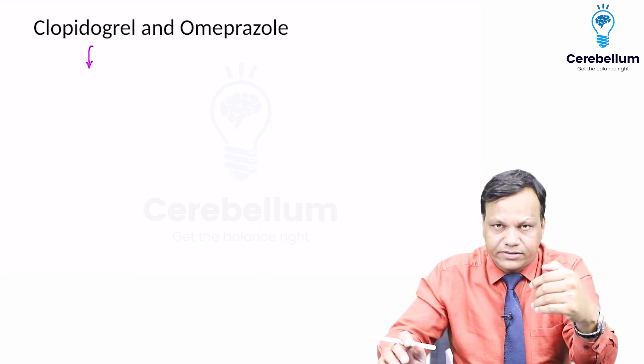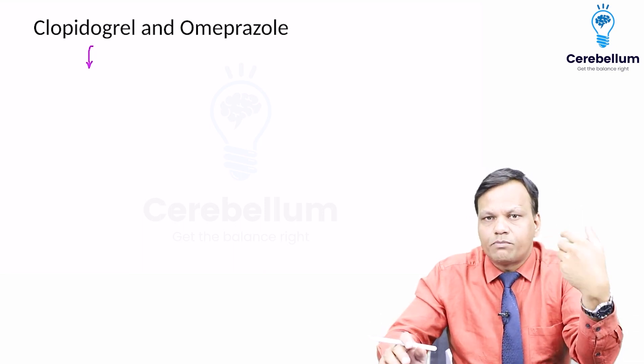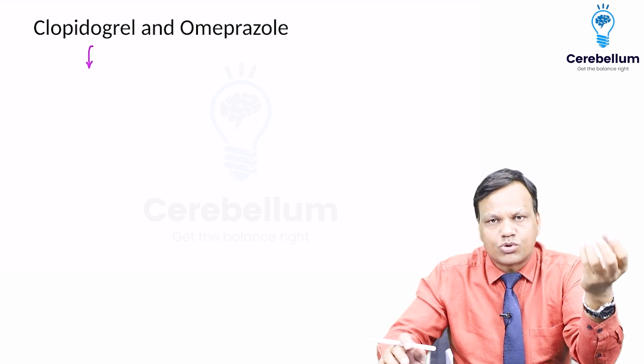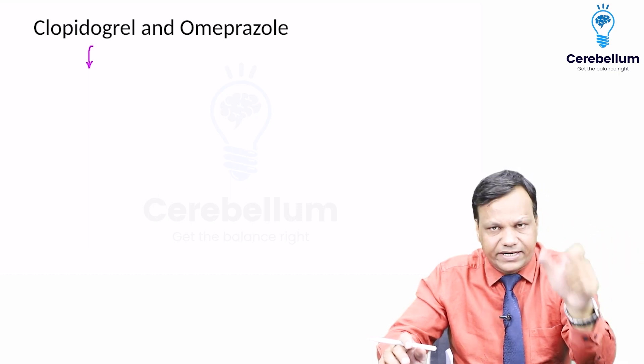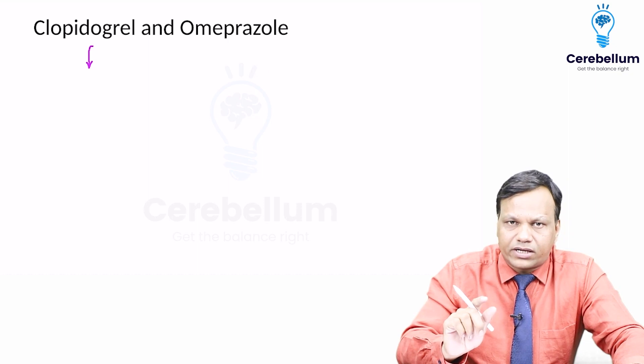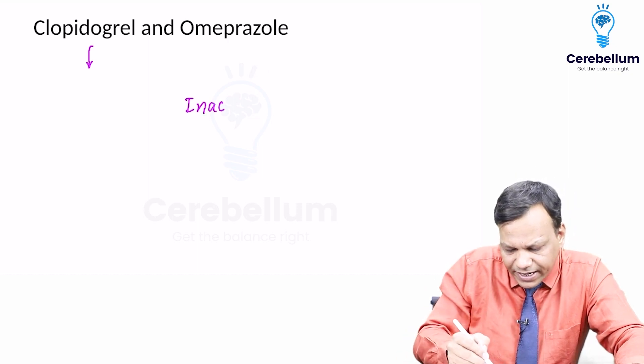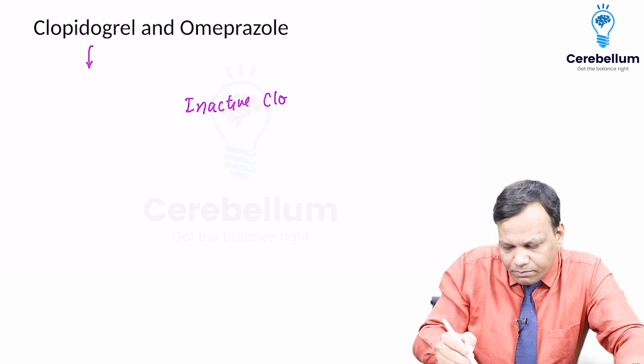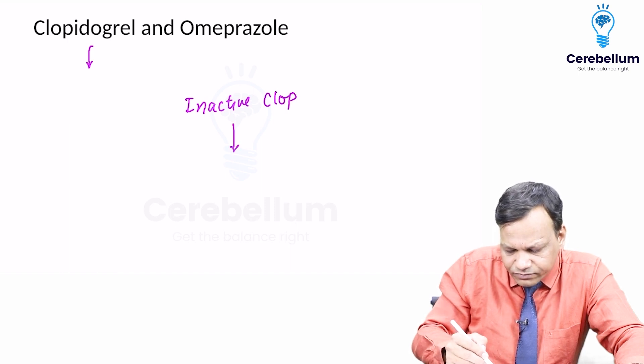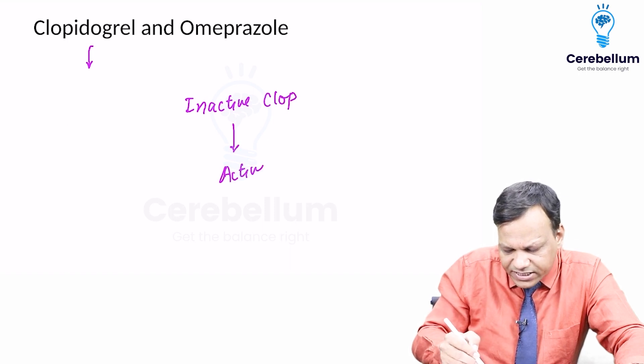It is used for prophylaxis of MI, stroke, etc. It is an anti-platelet drug, but it is a prodrug. So clopidogrel is inactive - clopidogrel is inactive, but it becomes active with the help of an enzyme.